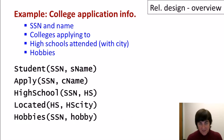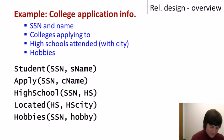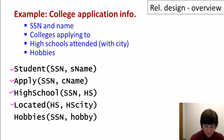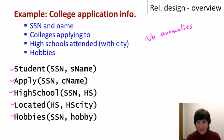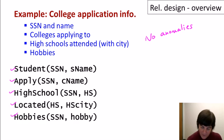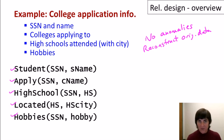Now let's take a look at a very different design for the same data. Here we have five different relations: one with information about students and their names, one where they've applied to colleges, one where they went to high school, one for where high schools are located, and one for student hobbies. In this case, we have no anomalies — no redundant information, no update anomaly, no deletion anomaly. Furthermore, we can reconstruct all of the original data, so we haven't lost any information. This looks like a much better design.